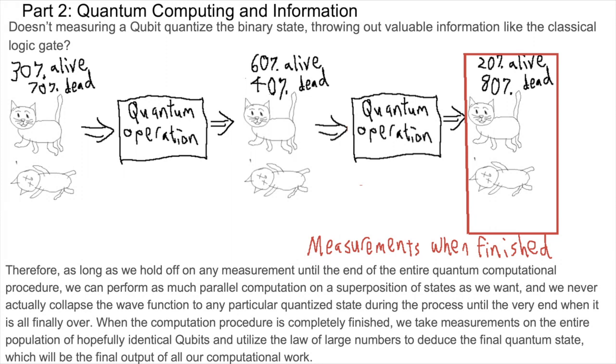When the computational procedure is completely finished, we take measurements on the entire population of hopefully identical qubits and utilize the law of large numbers to deduce the final quantum state, which will be the final output of all our computational work.